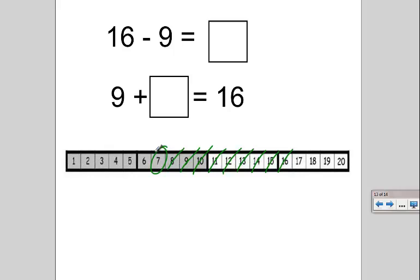Or I could start at 9 and count on. Put 9 in my head. 1, 2, 3, 4, 5, 6, 7. So those are two different ways to use your number line and your number path to help you find the right answer.